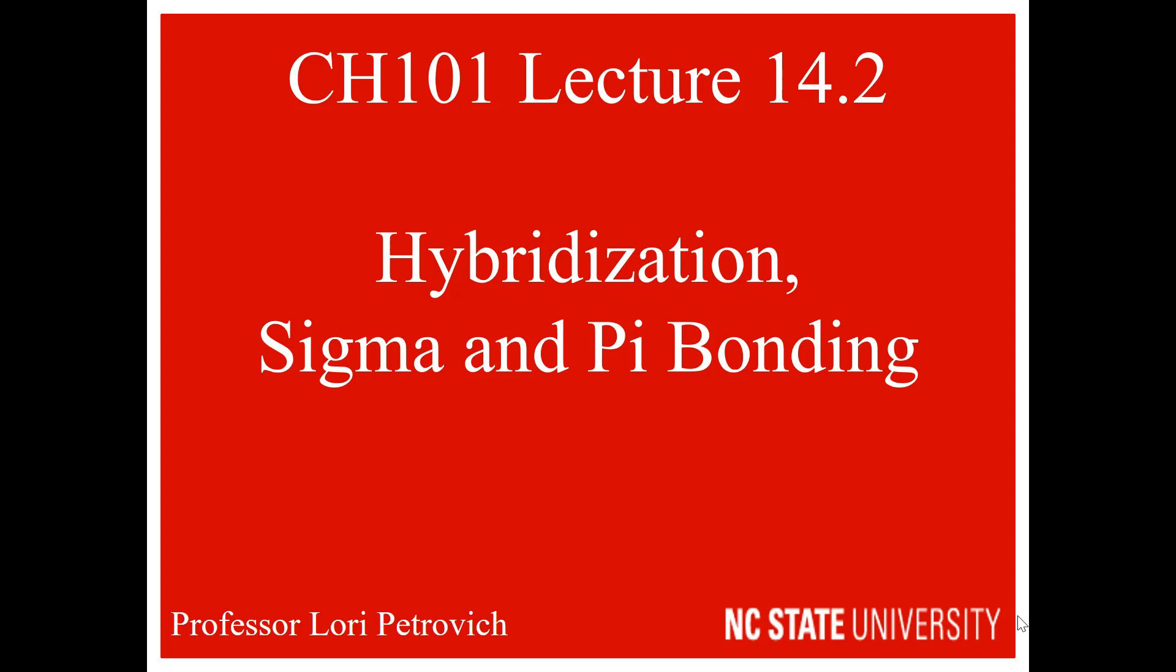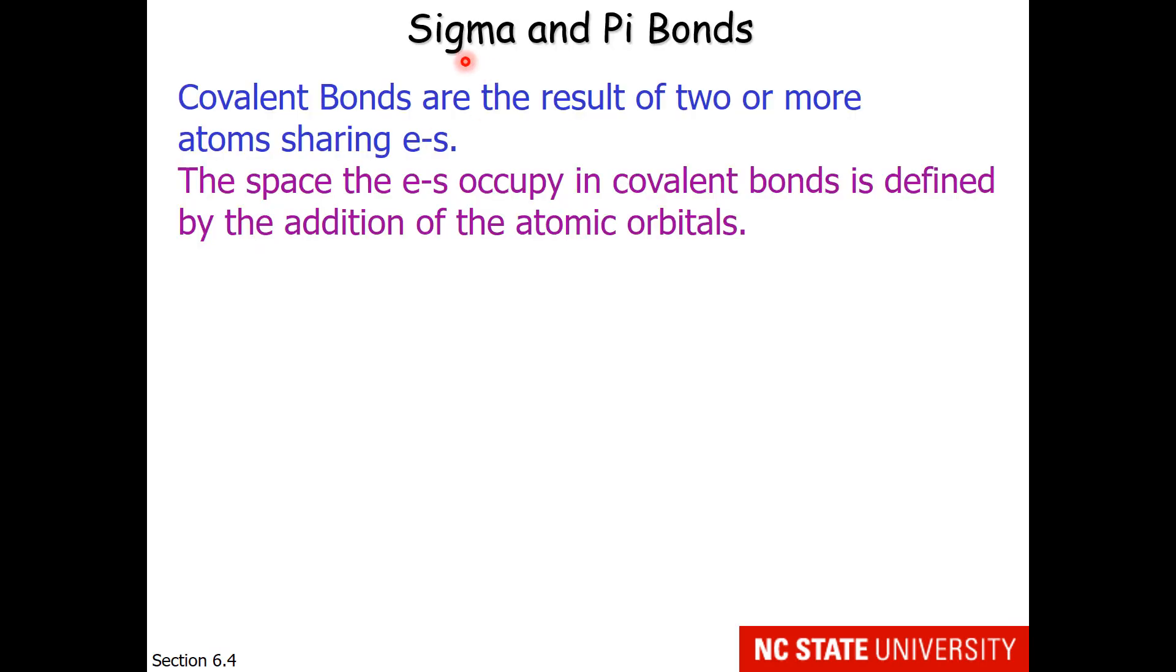The next part of this lecture concerns hybridization and sigma and pi bonding. Sigma and pi bonds are types of covalent bonds where two or more atoms share electrons. Atoms have orbitals, so the space the electrons occupy in covalent bonds is by the addition of atomic orbitals, those s, p, and d orbitals.